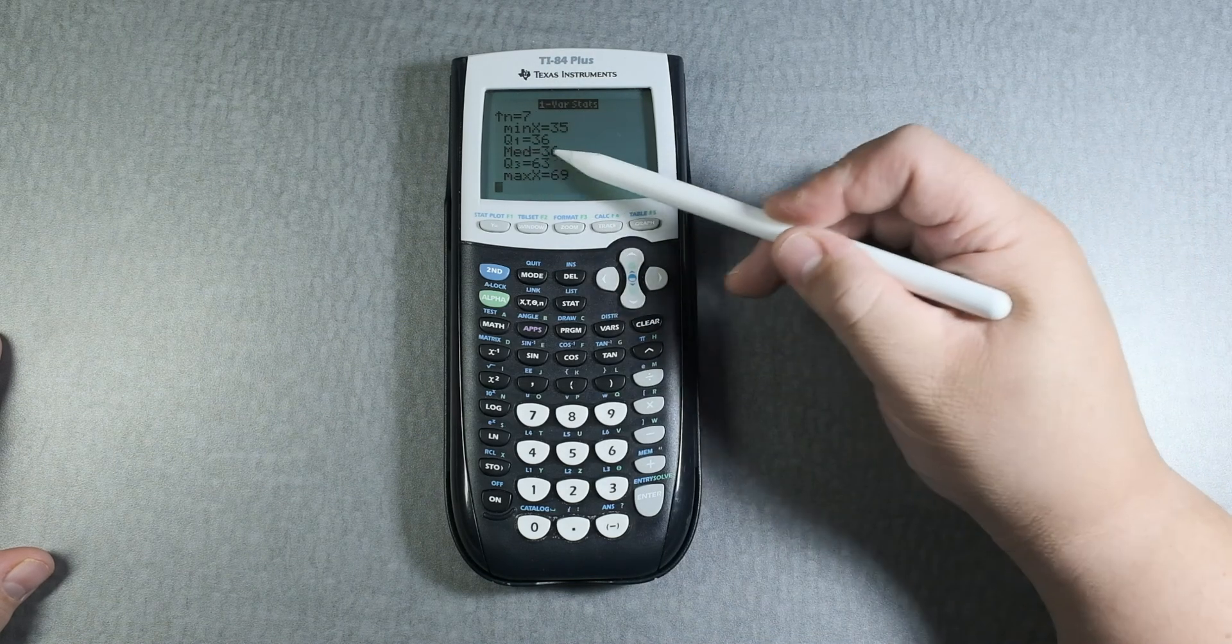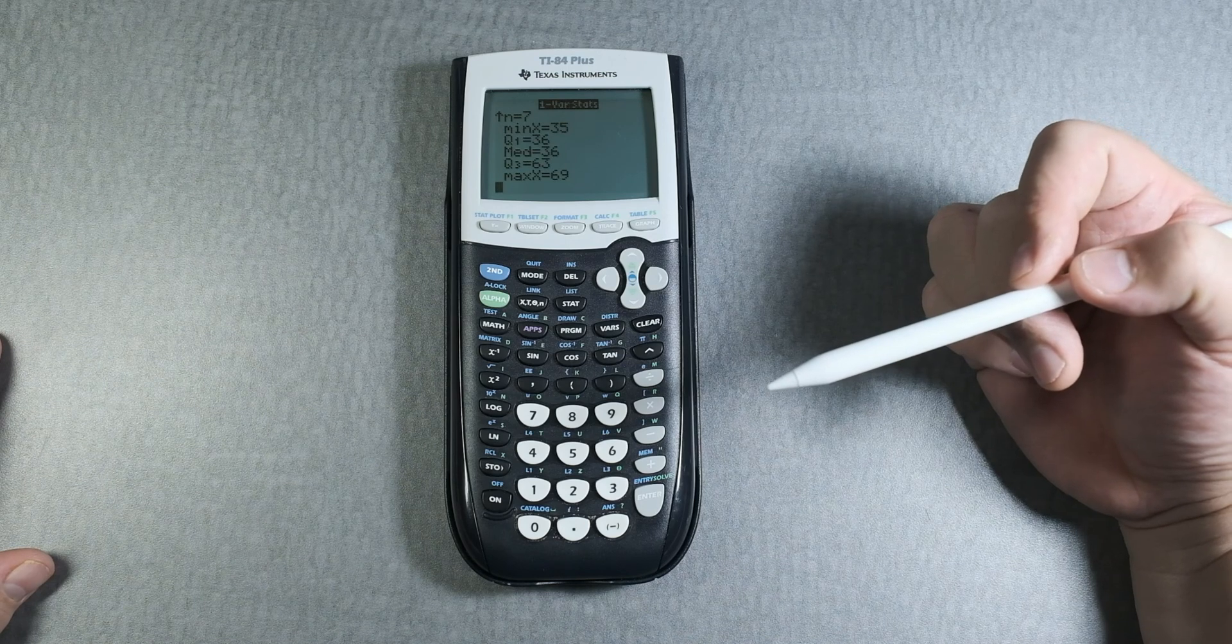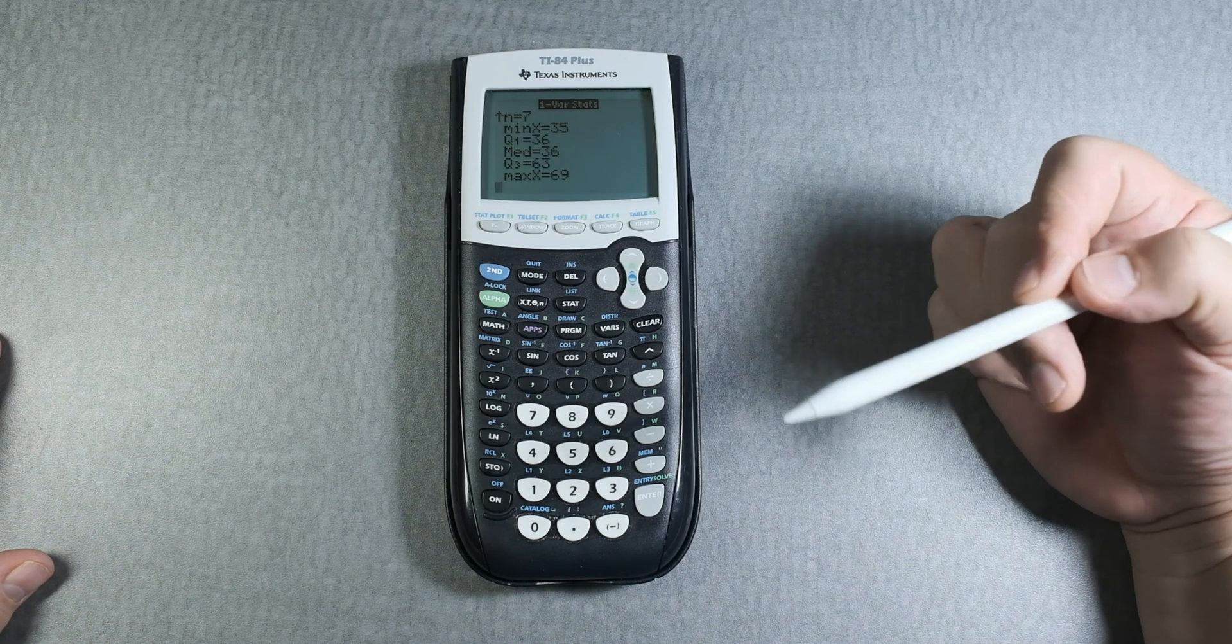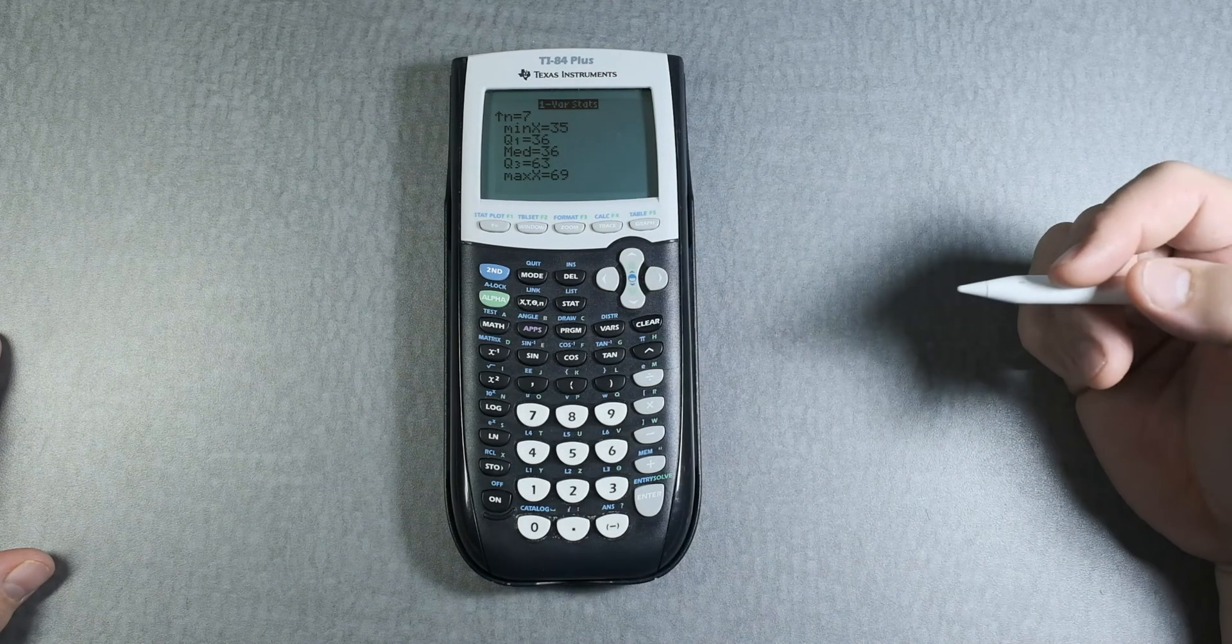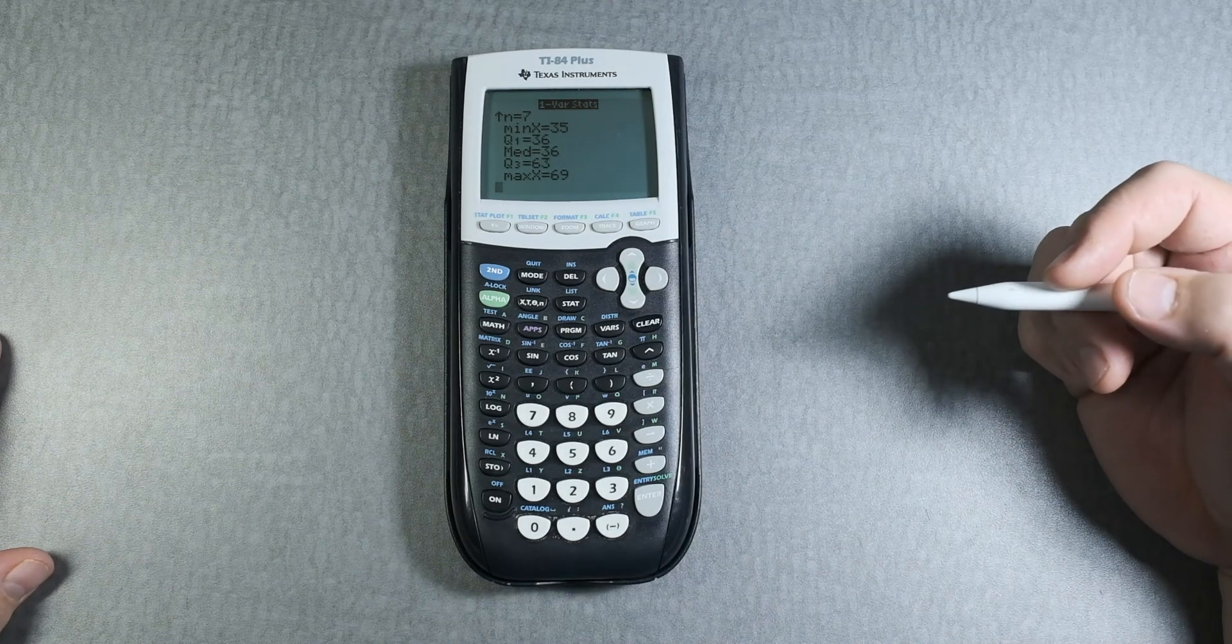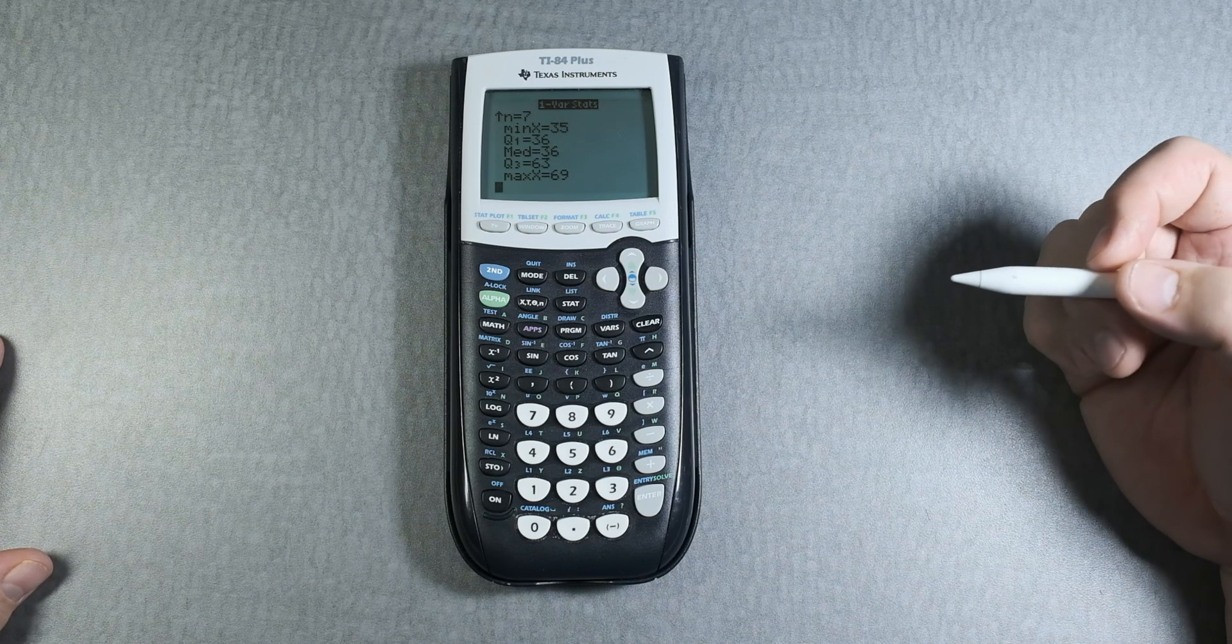And if you scroll down more, it gives you the median. And then it gives you the five number summary. It doesn't give you the mode, but you can find the mode by sorting the list. So that gives you an idea of the one variable statistics.